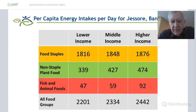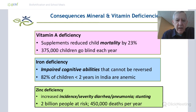This is the underlying cause of mineral and vitamin deficiencies: people want to eat a healthy diet, they want more non-staple plant foods and more fish and animal foods, but they simply can't afford them — not only because of low incomes, but also because the prices of non-staple foods are rising.